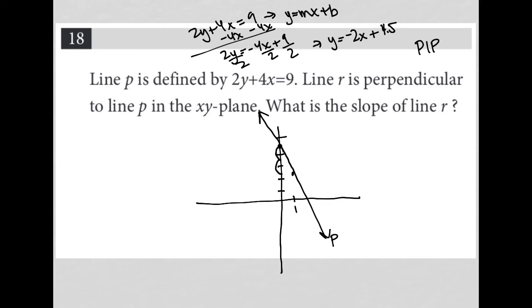Because whenever I'm looking for a perpendicular slope, all I care about is what's the slope of the line that we found. The slope is negative 2. So M is negative 2.